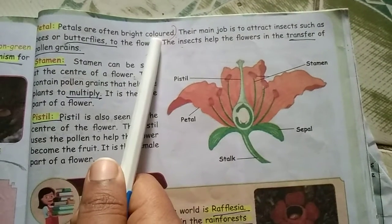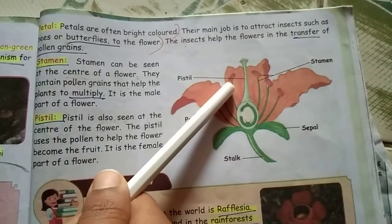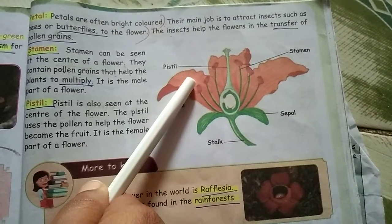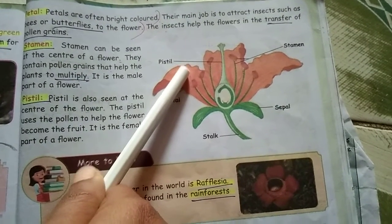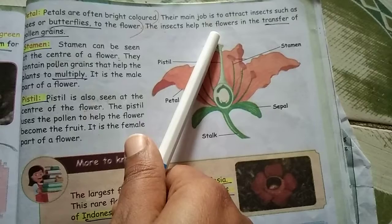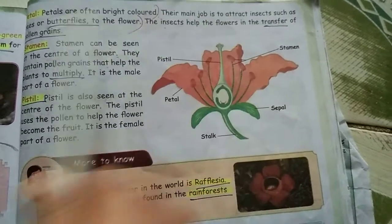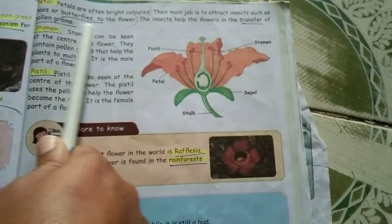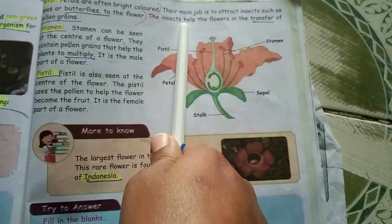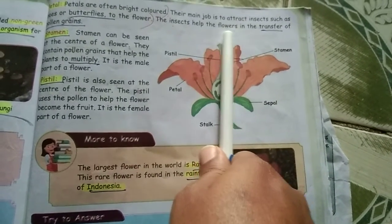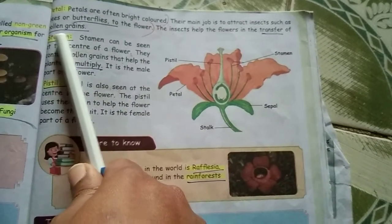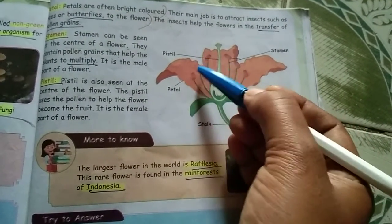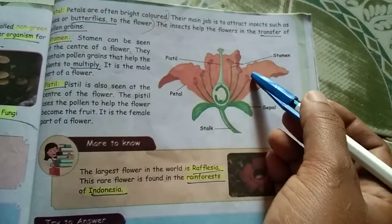The next part is the petal. Petals are often bright in color — look at the hibiscus and the rose, every petal is very bright in color: red, pink, yellow. But the main job of the petal is to attract insects such as bees and butterflies to the flower. The insects help the flower in the transfer of pollen grains.